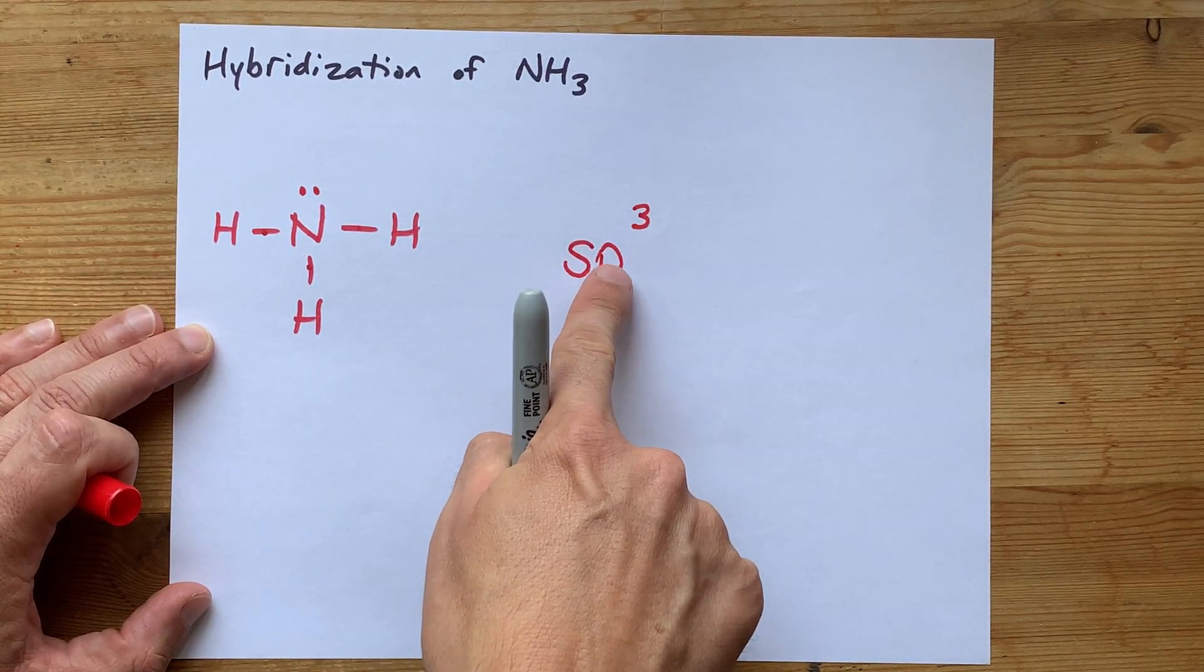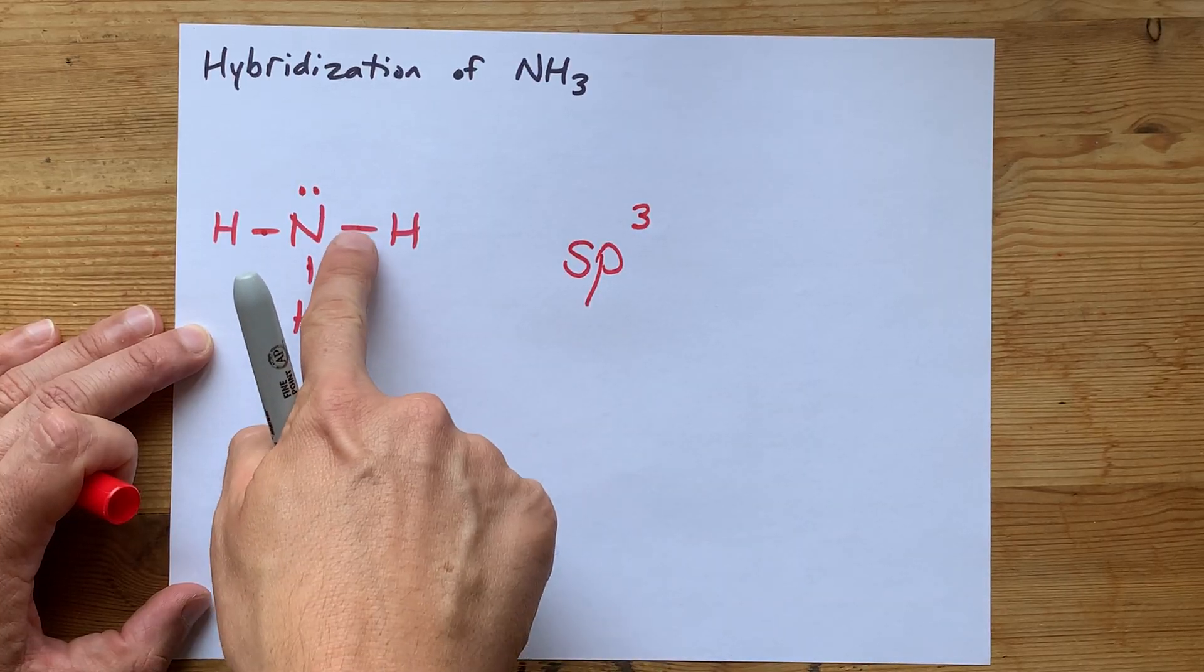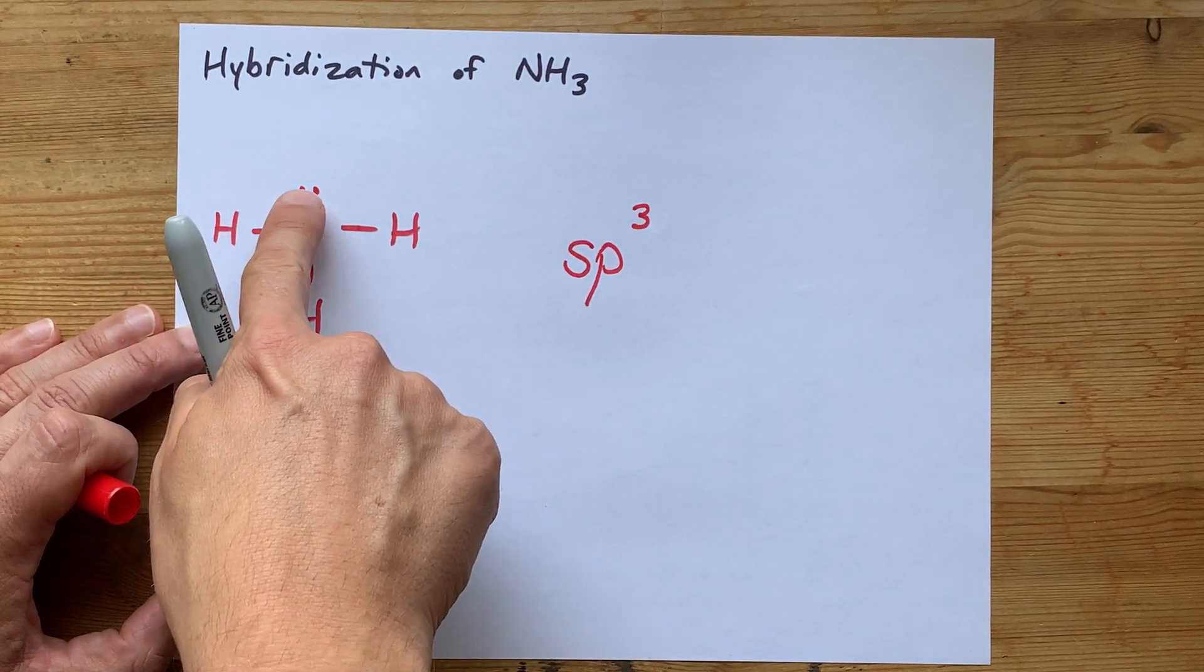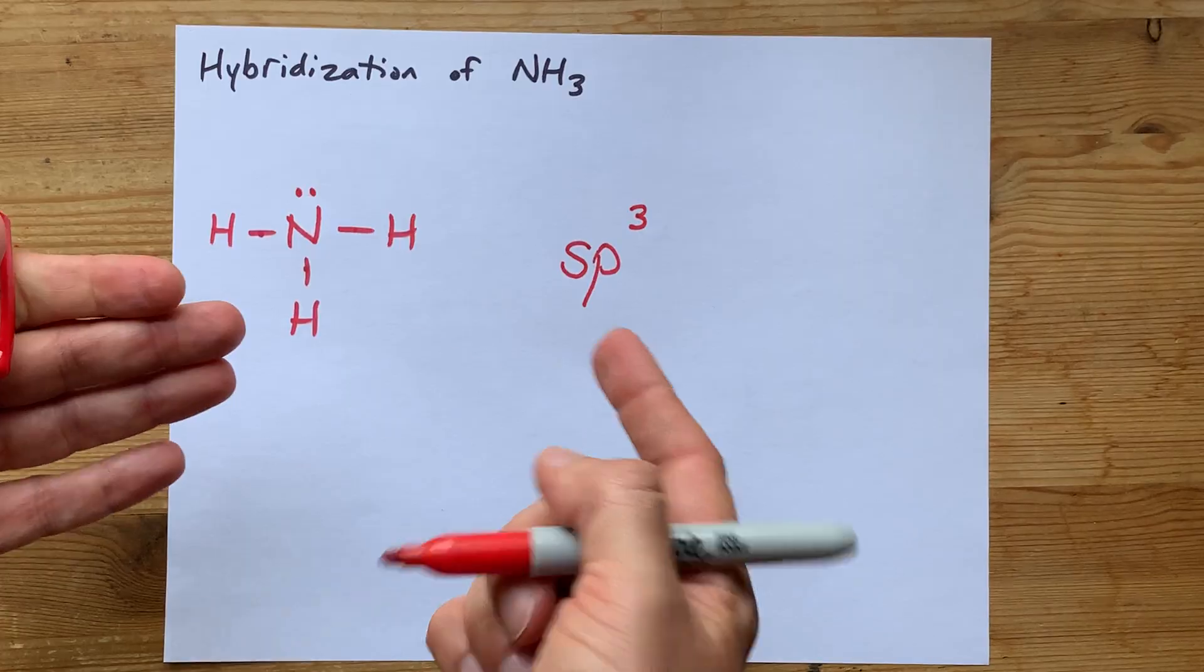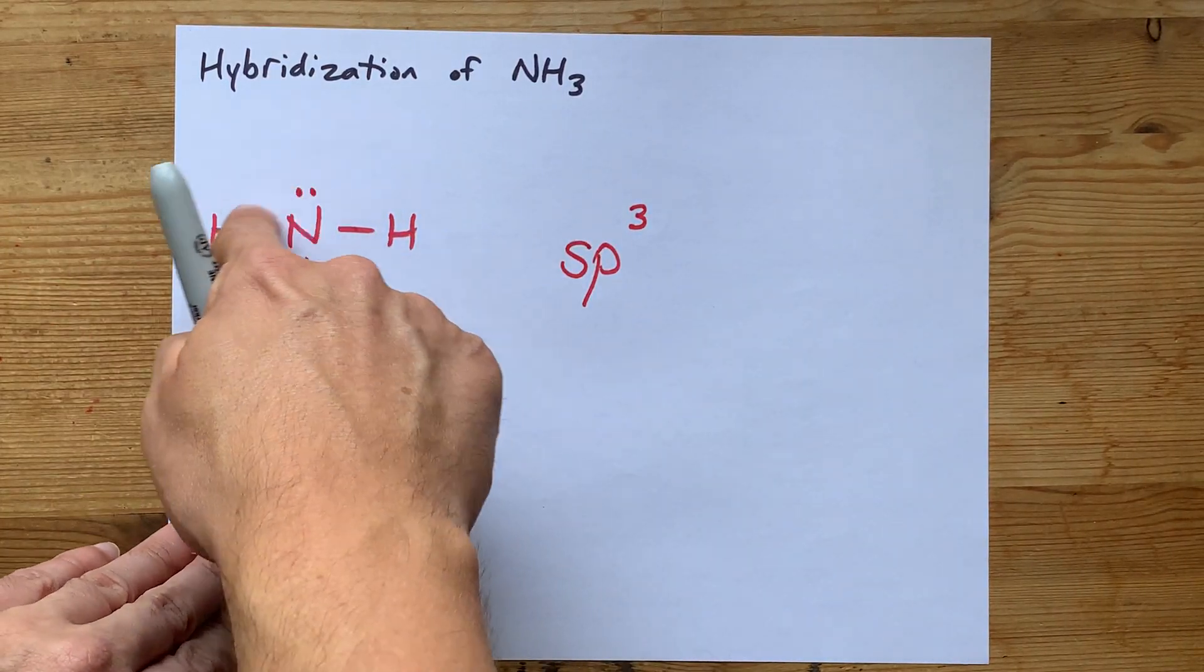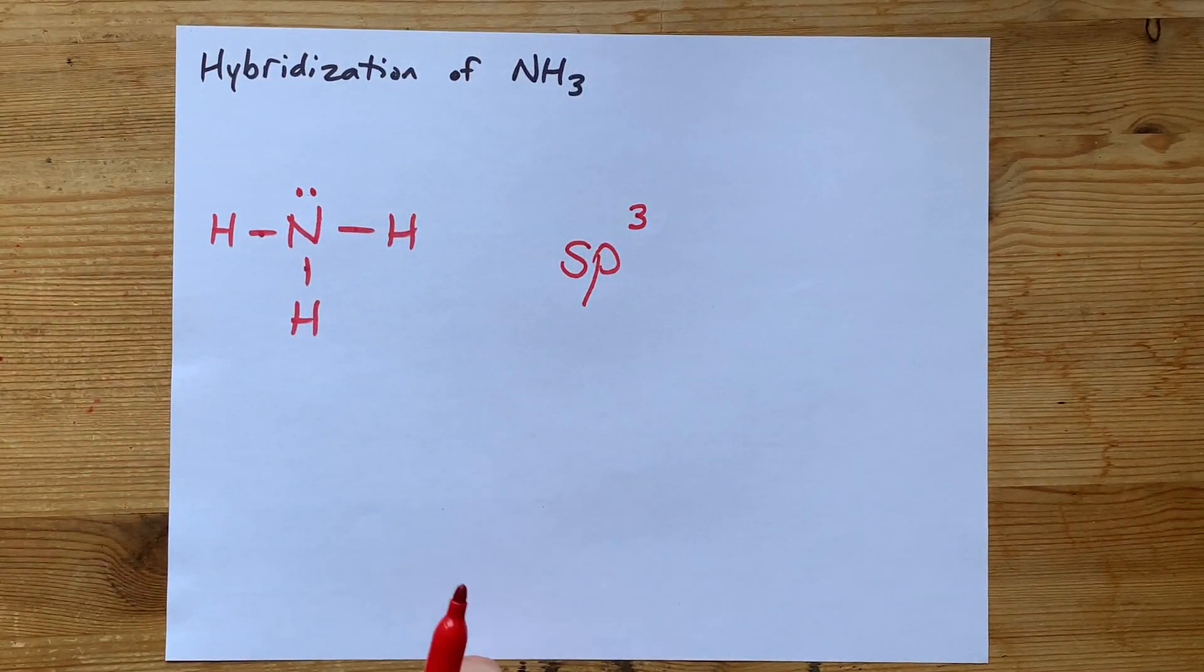Four hybridized orbitals is what lets you make 1, 2, 3, 4—well, in this case, three sigma bonds plus an occupied hybridized orbital for the lone pair as well.